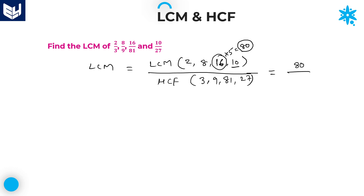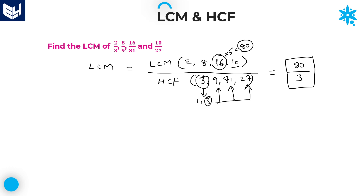In the denominator, take the lowest number, which is 3. The factors of 3 are 1 and 3. Take the highest factor, 3. Check whether 3 is a factor of each remaining number. 3 is a factor of 9, 3 is a factor of 81, and 3 is a factor of 27. So HCF of 3, 9, 81, and 27 is 3. Therefore, the required answer is 80/3.